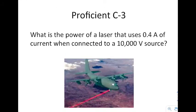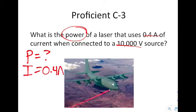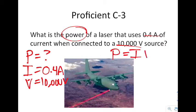The next example says what is the power of a laser that uses 0.4 amp of current when connected to a 10,000 volt source. So I am doing a calculation. I am looking for the power. This is what is the power. 0.4 amps is a current. It tells me that I am connected to a 10,000 volt source. And as a result of that, I can say P equals IV. When I plug my numbers in, I can say 0.4 times 10,000 ends up being 4,000 watts.